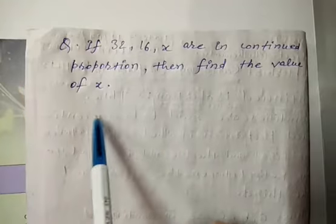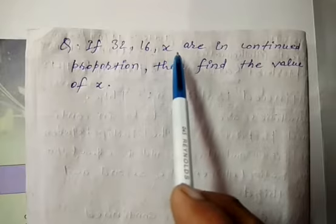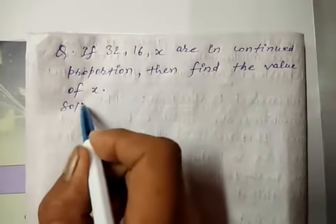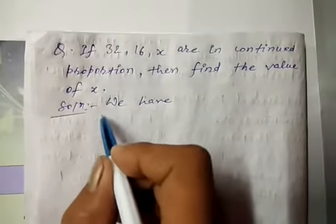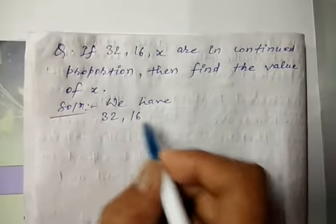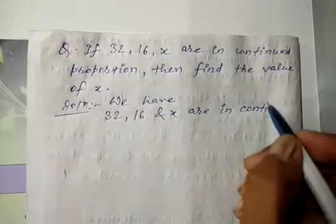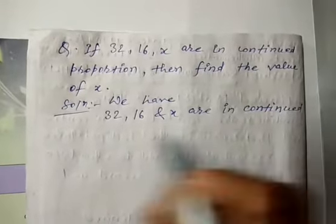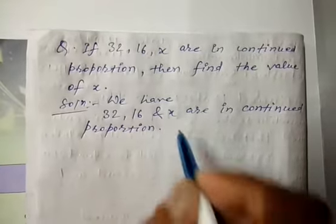Now the next question: If 32, 16, and x are in continued proportion, then find the value of x. Solution: We have 32, 16, and x in continued proportion.